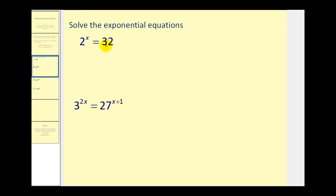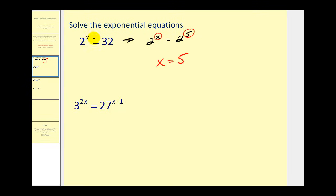On this first problem, 32 is equal to two to the power of five, so we can rewrite this as two to the power of x equals two to the power of five. It follows that the exponents must equal each other, meaning x must equal five. And we can see that when x equals five, this equation is true.